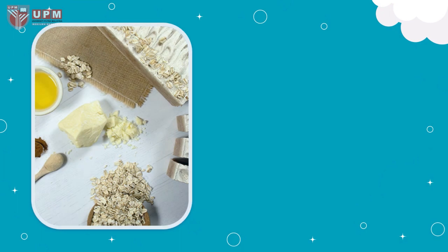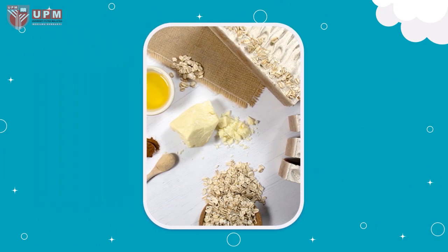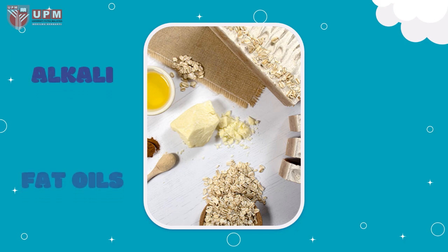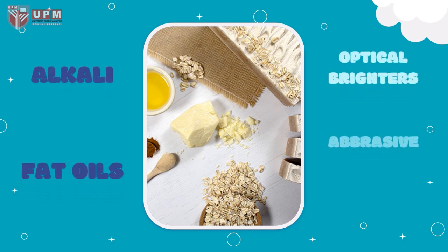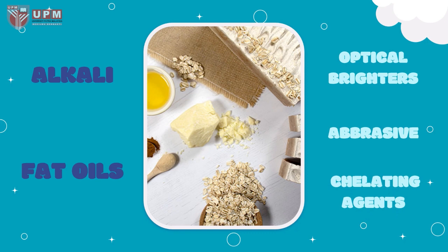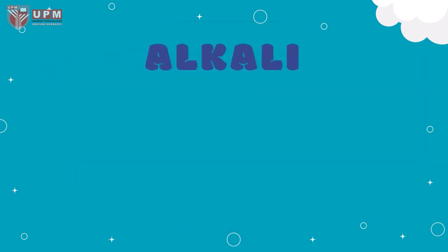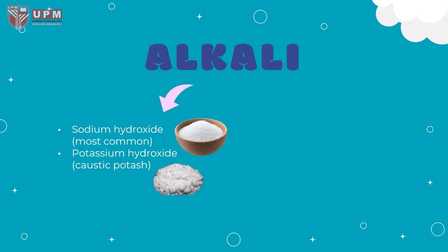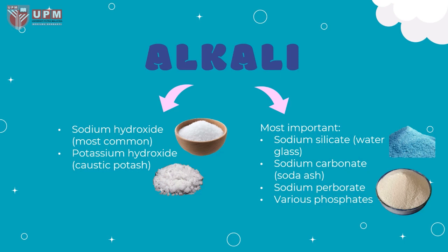Raw materials and additives. There are two main ingredients to make soap, which are alkali and fat-oil. Optical brighters, abrasives, and chelating agents are its additives. The most common alkali used are sodium hydroxide or potassium hydroxide. Other important alkalis to make soap include sodium silicate, sodium carbonate, sodium perborate, and various phosphates.